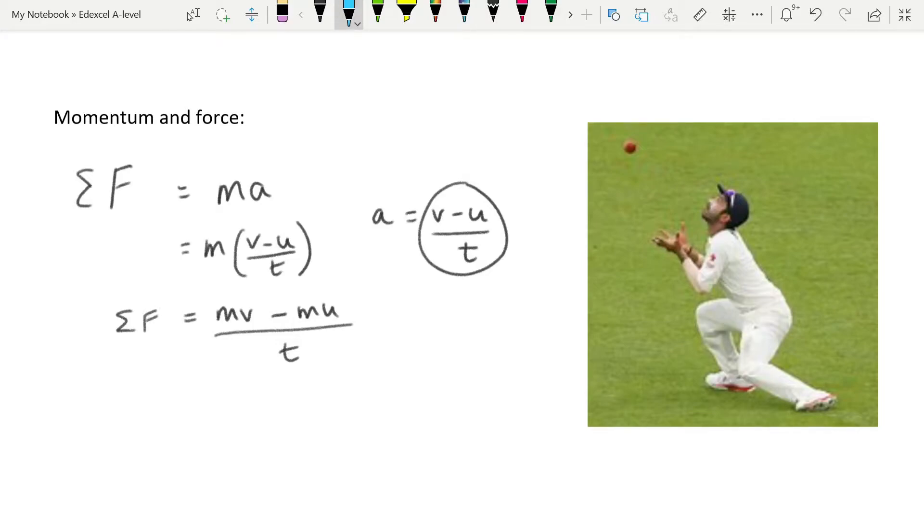Using our usual nomenclature, mv is mass times the final velocity, and mu would be mass times initial velocity. So what this is telling us is that change in momentum over time is equal to a resultant force. In real terms, that means if you have a moving object that has a mass and a velocity, if you want to change the momentum of that object, the product of its mass and velocity, you have to apply a resultant force.